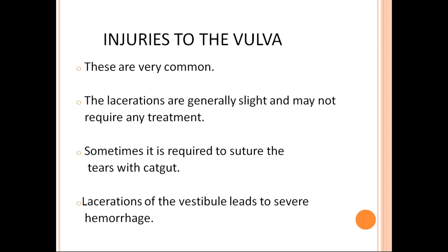Coming to injuries to soft tissues — firstly, injury to the vulva. This is very common during delivery. Lacerations are generally slight and may not require any treatment. Sometimes it is required to suture the tears with catgut. If there are mild mucosal or slight injuries, we generally do not suture them because the blood supply of the vulval region is very good and it will heal on its own. But if the injury is deep or there is bleeding, we will suture the tears. Lacerations of the vestibule lead to severe hemorrhage because the blood supply of the vestibule is very high, so even a minor injury can cause severe hemorrhage and should be sutured.